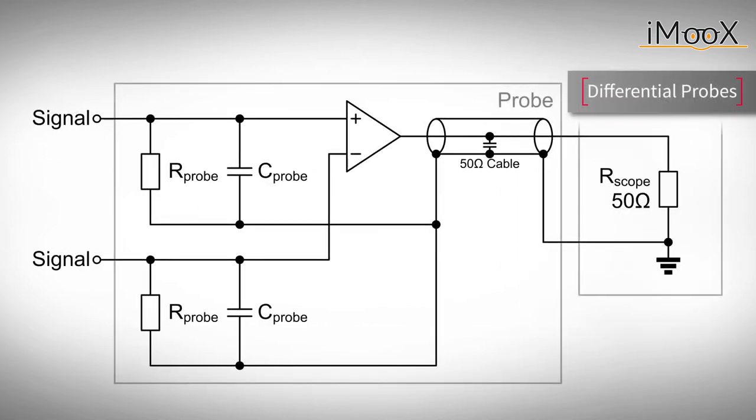A third type of probes are differential probes. Usually, a scope measures the voltage between a node in a circuit and common ground. In contrary to normal probes, differential probes allow to measure voltages between two arbitrary points in a circuit, which has quite some advantages, as we will see shortly. Differential probes can especially be used for signals of low amplitude and provide a very good common mode rejection. The difference between the two input signals is the input of a differential amplifier. It is providing a single-ended output signal that is passed on to the single-ended scope input.